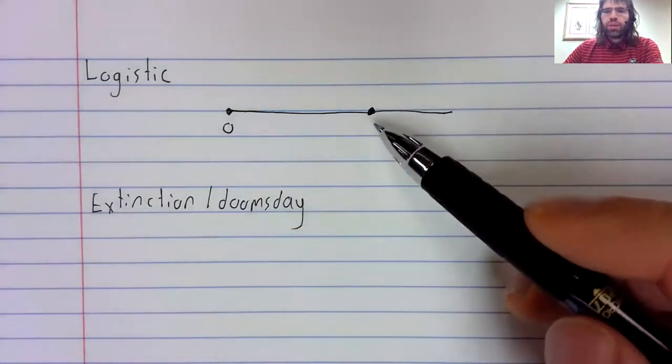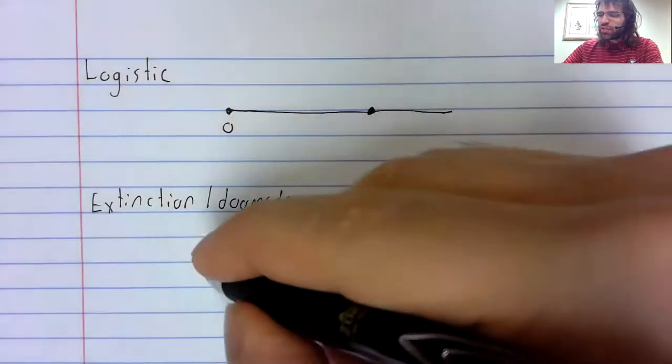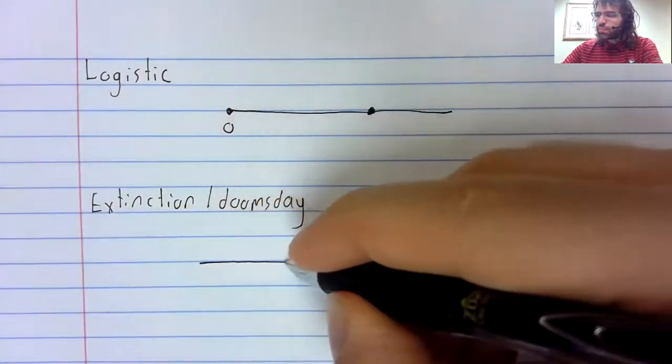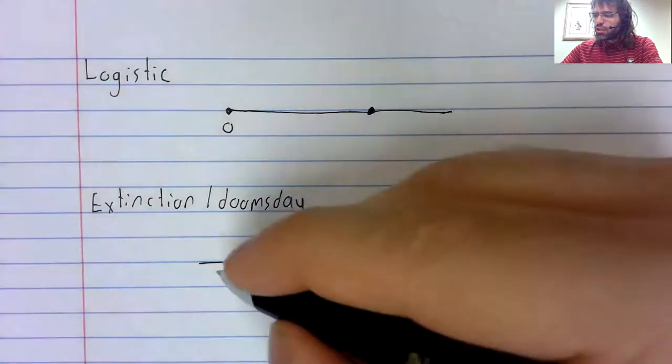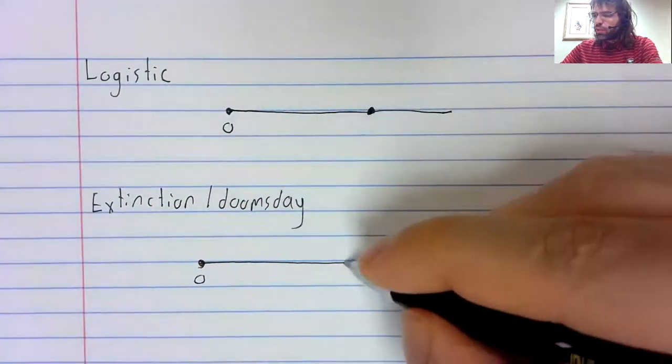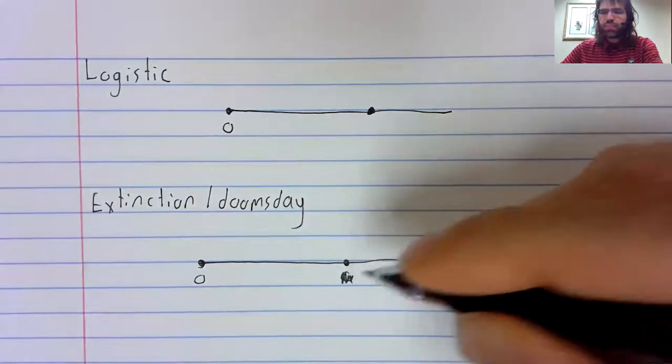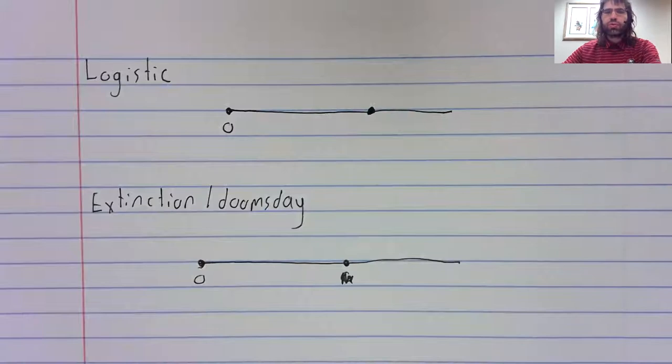In the logistic model, we called this second fixed point the carrying capacity. In the extinction doomsday model, we didn't give this second fixed point any kind of special name.